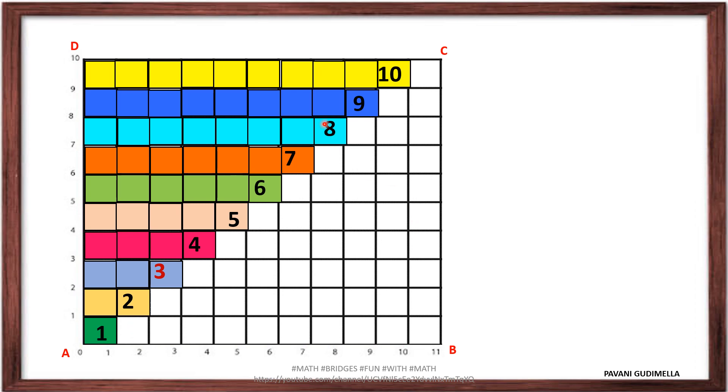If you observe here, this shaded area is one half of the whole area, the grid whatever we have taken. To see this, you cut the shaded portion and place it on the remaining part of the grid.